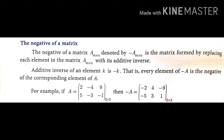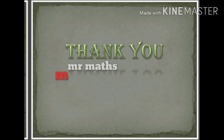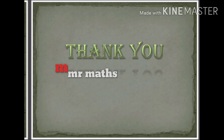For example, if A = [2, -4, 9; 5, -3, -1], then -A = [-2, 4, -9; -5, 3, 1]. Each element's sign is flipped. This is called the negative of a matrix. These types of matrices are very important for exams. Thank you students — study well and prepare well.